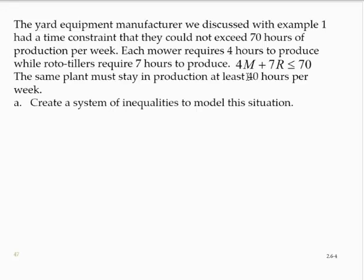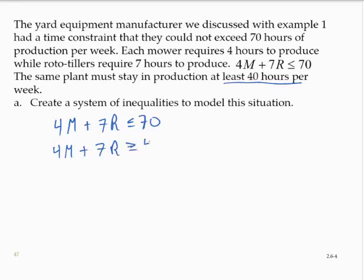Now suppose that the same plant must stay in production at least 40 hours per week. Since they are still only producing mowers and rototillers, we still know that 4m plus 7r must be less than or equal to 70. They cannot exceed 70 hours, but now we must also have at least 40 hours. So four times the number of mowers — four hours per mower, seven hours per rototiller — must be greater than or equal to 40. So here's a system of inequalities that models the situation.